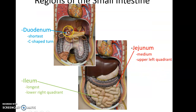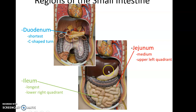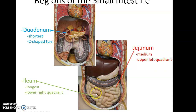The small intestine begins with the duodenum — a short, C-shaped curve going from the stomach and wrapping around the pancreas. The upper left quadrant of the small intestine is the jejunum, and the largest portion in the lower right quadrant is the ileum. Food travels in order: duodenum → jejunum → ileum.